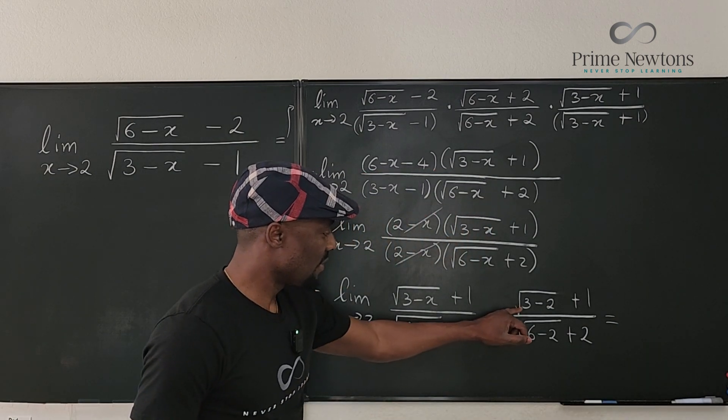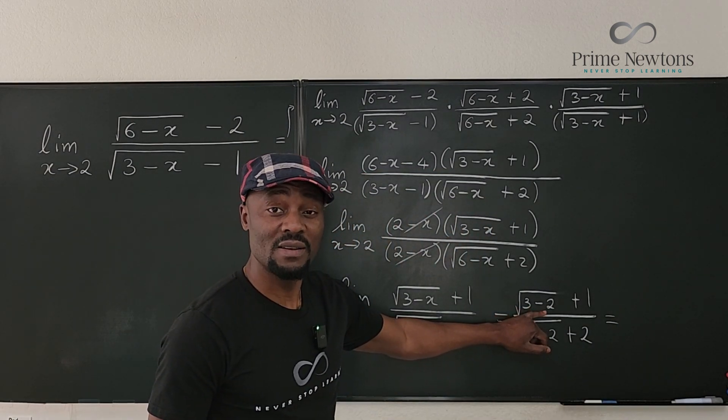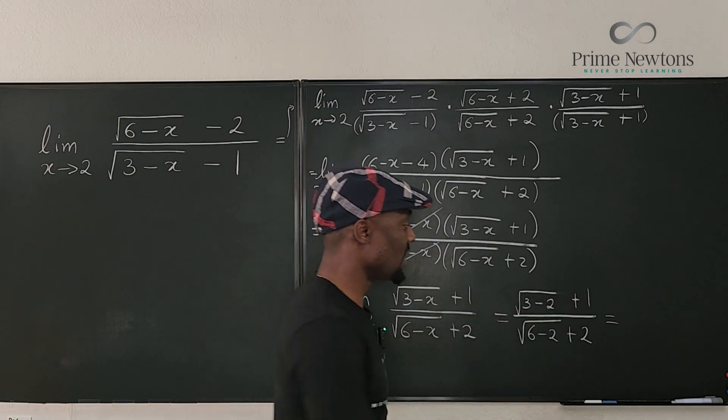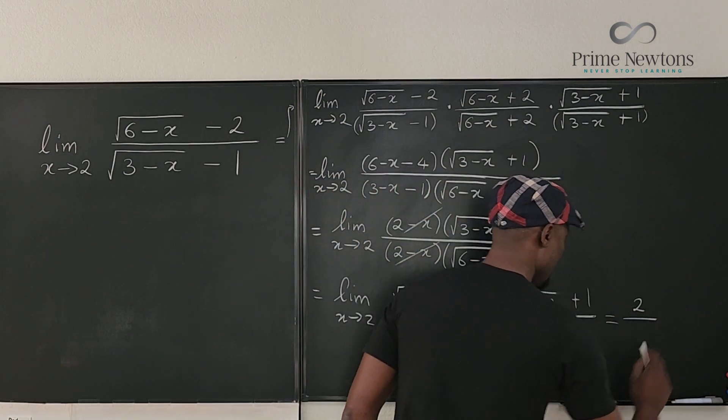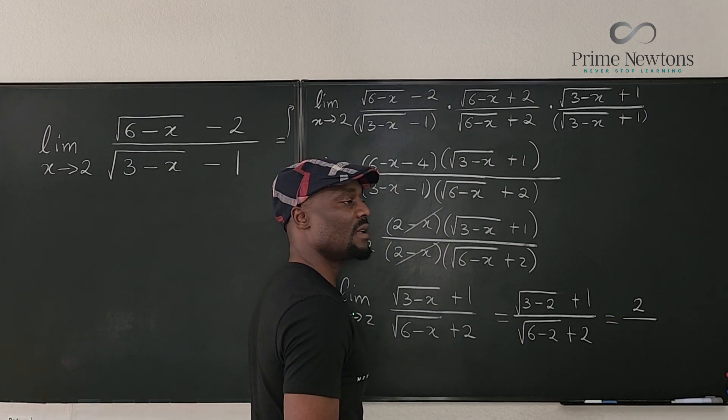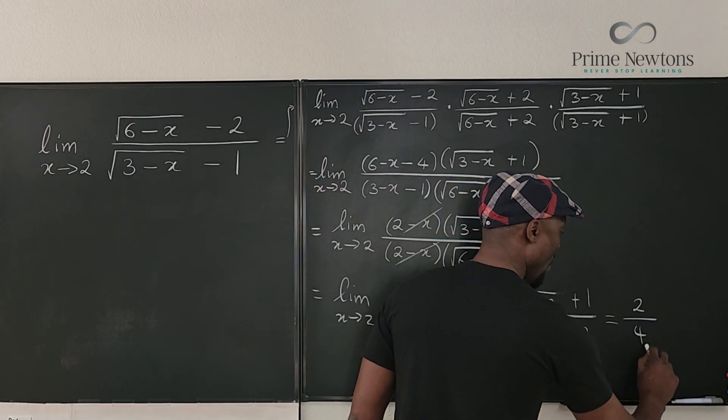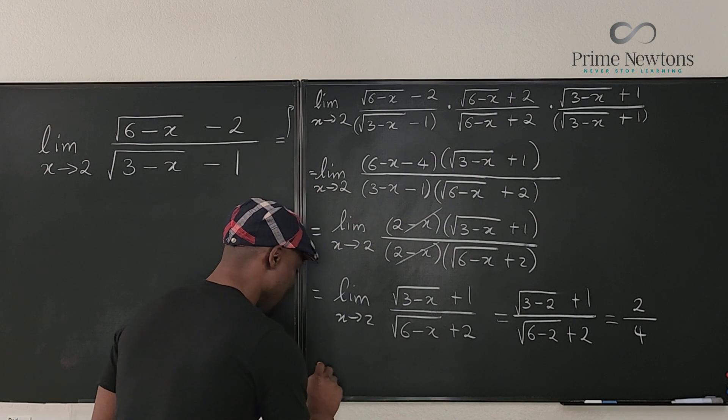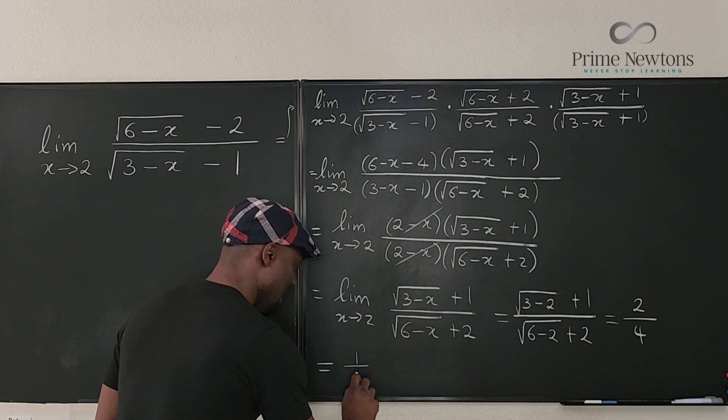What is this? 3 minus 2 is 1. Square root of 1 is 1. 1 plus 1 is 2. This is going to be 4. Square root of 4 is 2. 2 plus 2 is 4. I see. The final answer is 1 half.